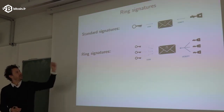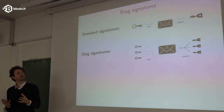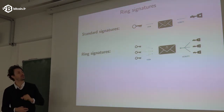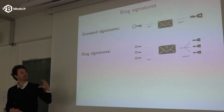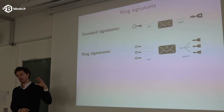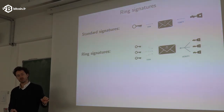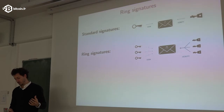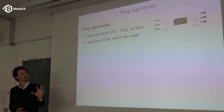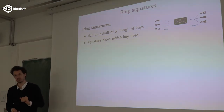What are ring signatures? In a regular signature scheme, you have a signing key and a verification key. You use the signing key to create a signature of a document, and anyone with the verification key can check the signature. In ring signatures, you sign a document with respect to a set of many keys. The signature guarantees that you used one of the corresponding secret keys, but it does not reveal which one was used.